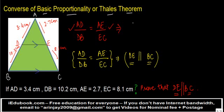What is the value of AD? AD is equal to 3.4 cm, and DB is 10.2 cm. If this holds, then this should be equal to AE, which is 2.7 cm, divided by EC, which is 8.1 cm.